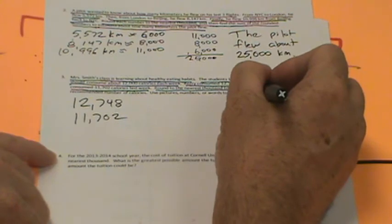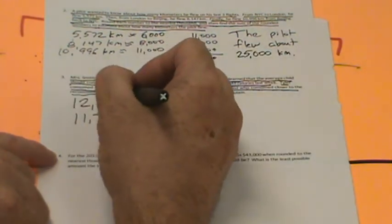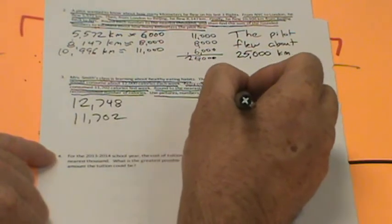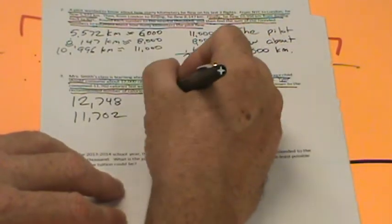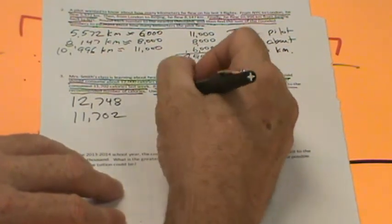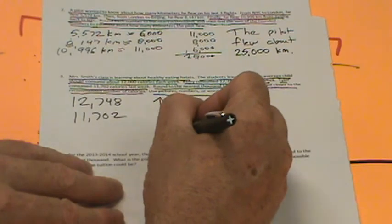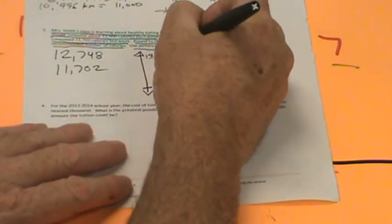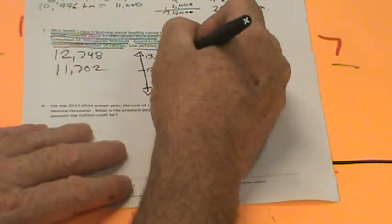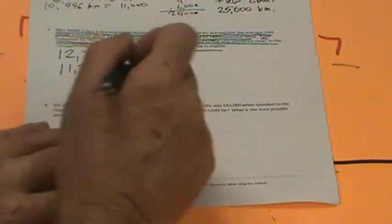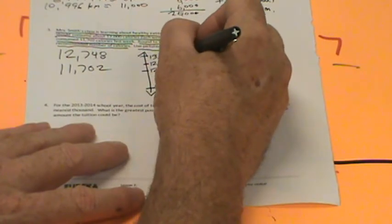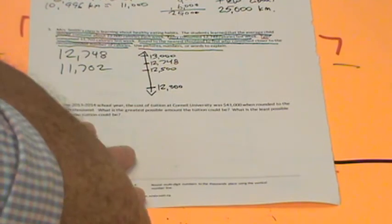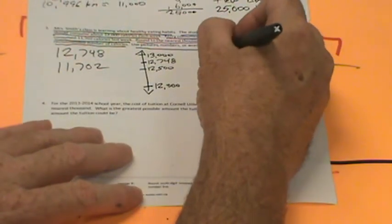Round to the nearest thousand to find who consumed closer to the recommended number of calories. The recommended number is 12,000, so who's closer to 12,000? Let's do a number line. Let's do 12,748 first. I'm going to put 12,000 here—that's our goal—and then 13,000 up here, and 12,500 right here. 12,748 would be right around here. It's greater than 12,500.